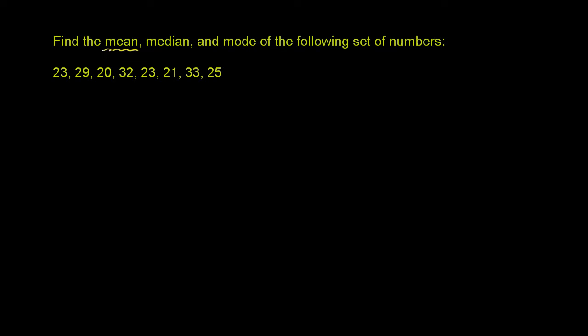Sometimes it's called the arithmetic mean, because you'll learn that there's other ways of actually calculating a mean. But really, you just sum up all of the numbers, and you divide by the numbers there are. And so it's one way of measuring the central tendency, or the average. So this is our mean. We want to average 23 plus 29, or we're going to sum 23 plus 29 plus 20 plus 32 plus 23 plus 21 plus 33 plus 25.